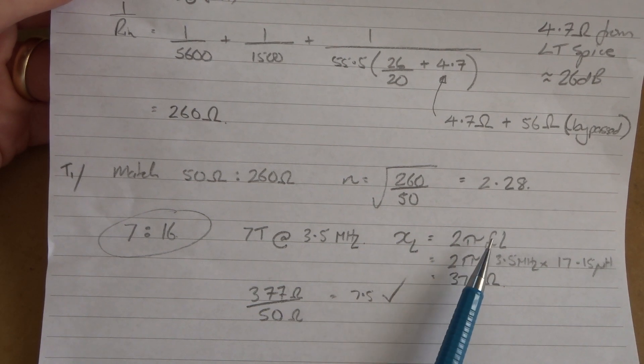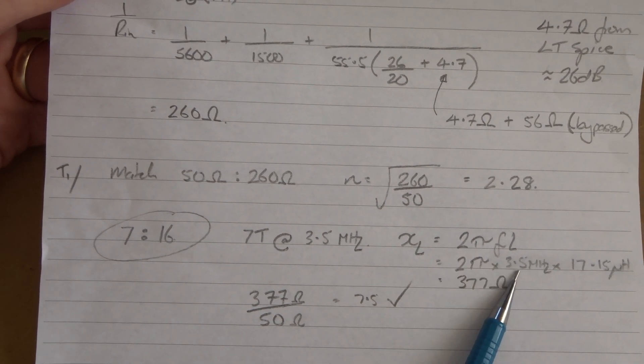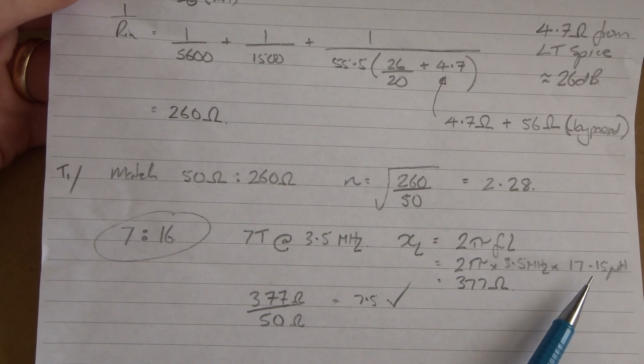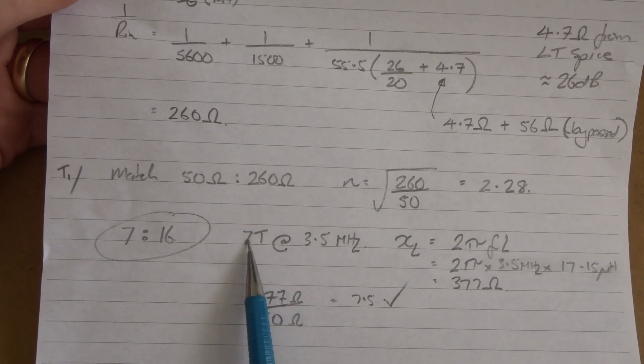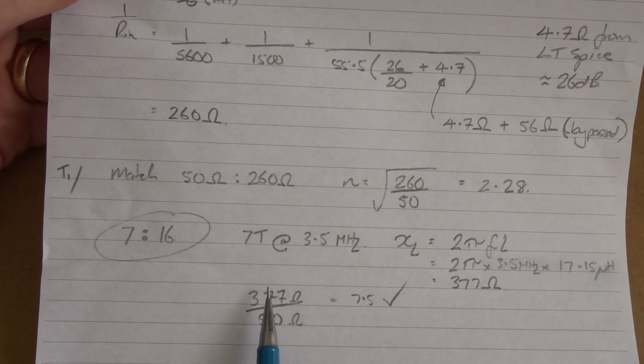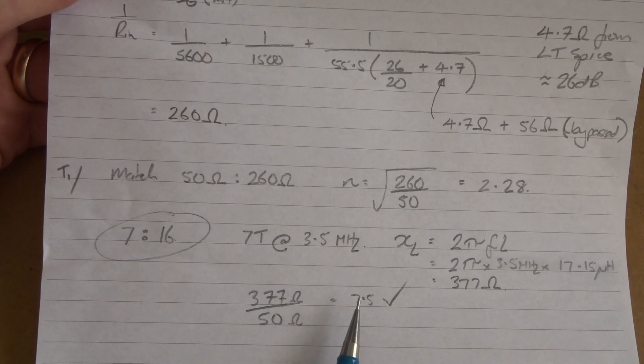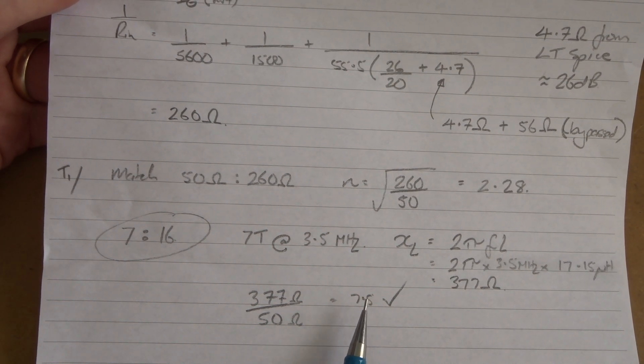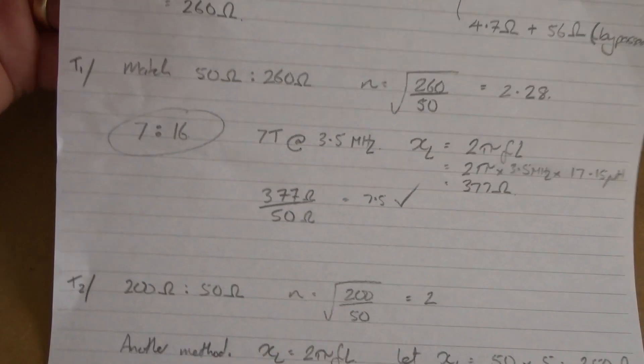Now I can plug the knowns into the inductive reactance formula - 2 pi times 3.5 megs, the lowest frequency of operation, times our inductance from the 7 turns on that core, comes out at 377. 377 divided by 50 equals 7.5, so I'm well in excess of that rule of thumb of 4 to 5 times. Big tick.